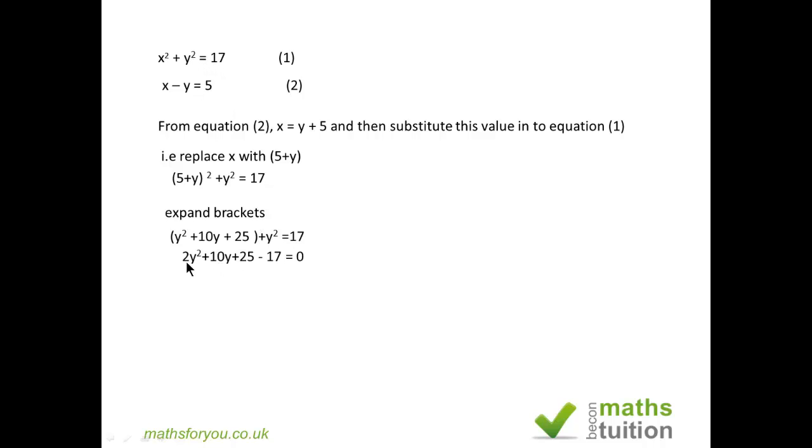You move your brackets and you end up with 2y squared, because y squared plus y squared, plus 10y plus 25 minus 17, that's equal to 0. And of course 25 minus 17 is 8.